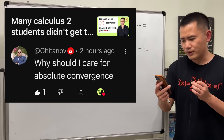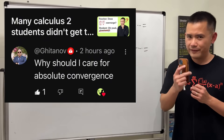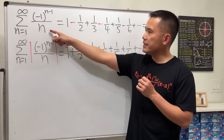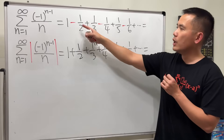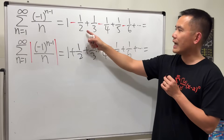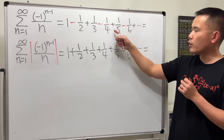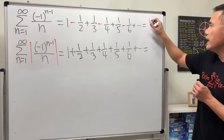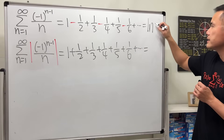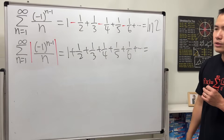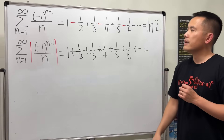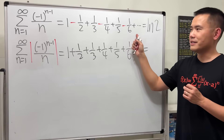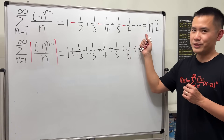Why should I care for absolute convergence? Great question. Let's look at the alternating harmonic series: 1 minus 1/2 plus 1/3 minus 1/4 and so on. This actually converges, and the answer is ln(2), which is about 0.693. I'll have a video on this later, but let's take this result for now.